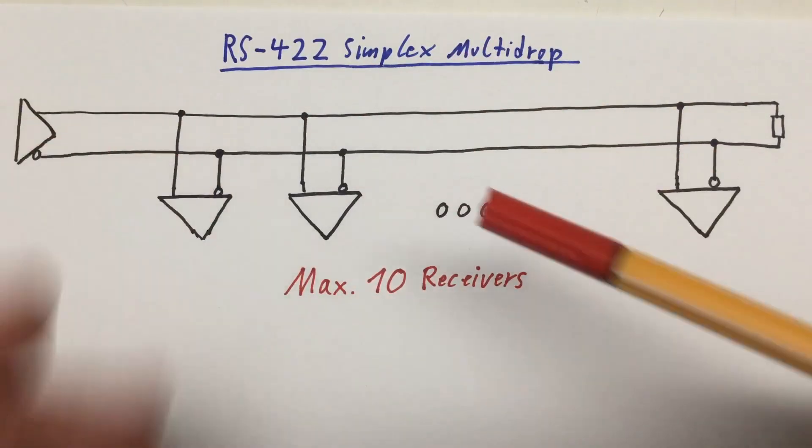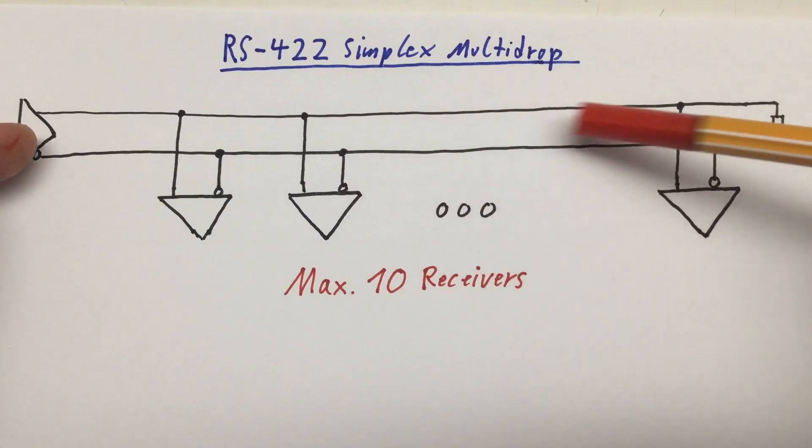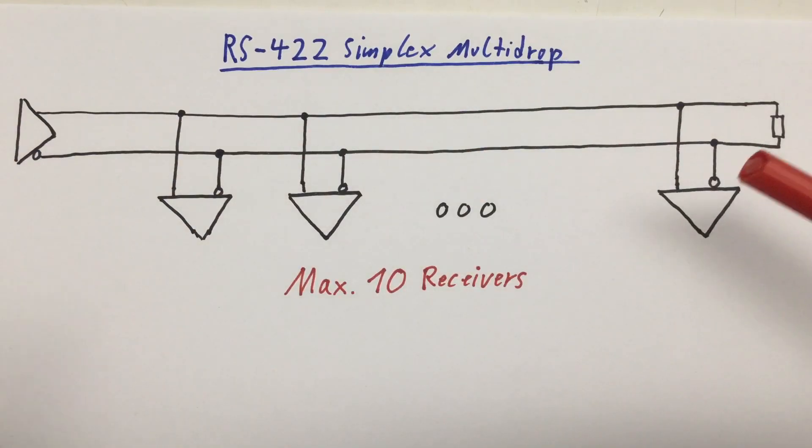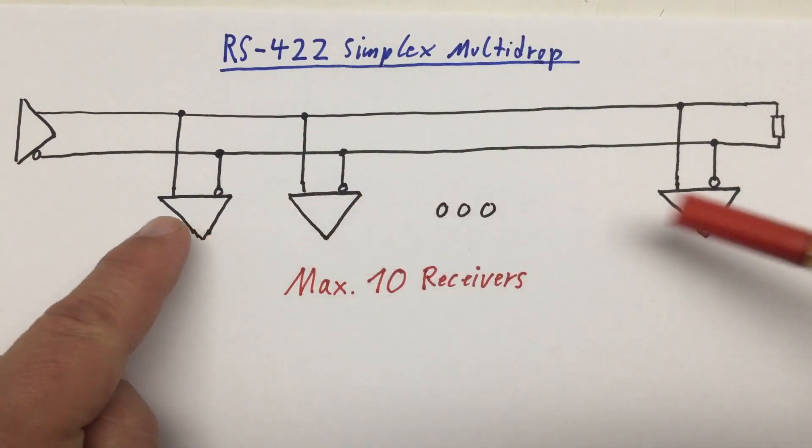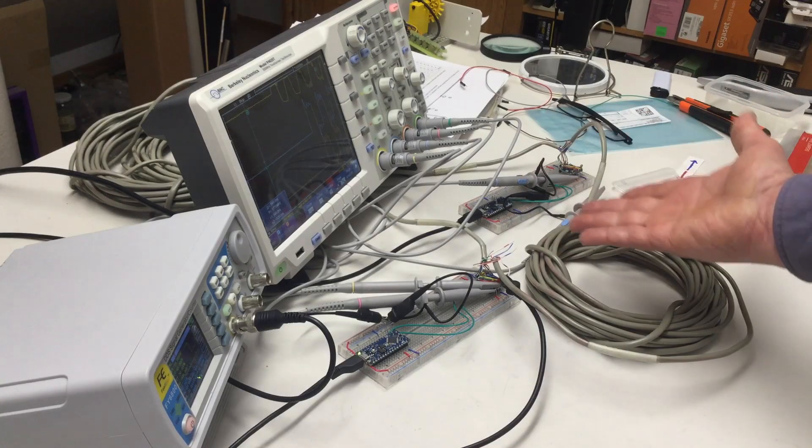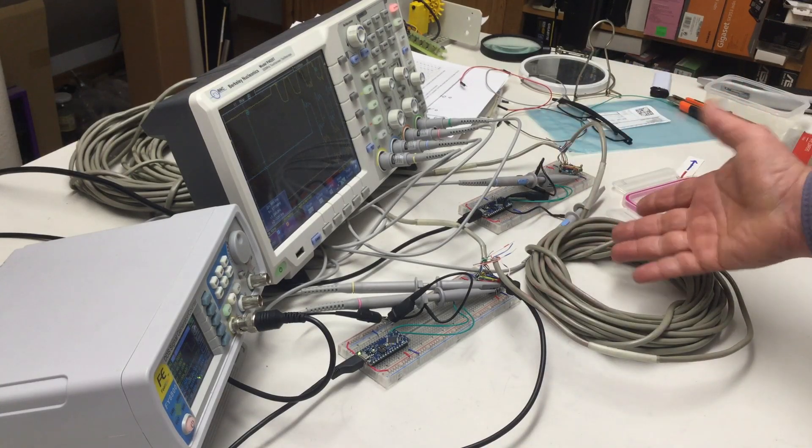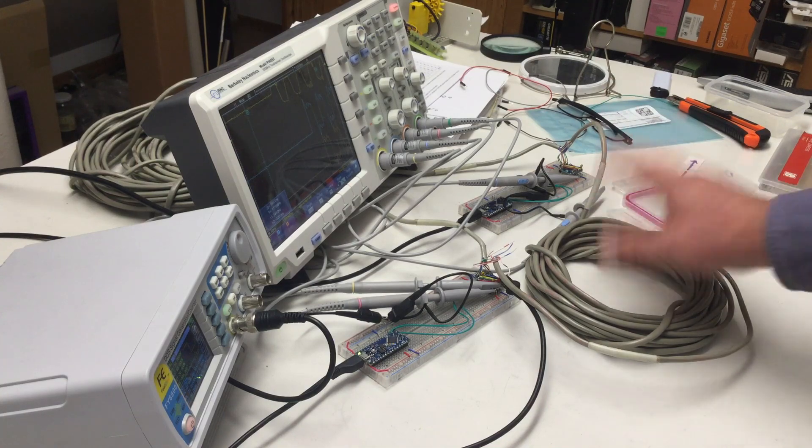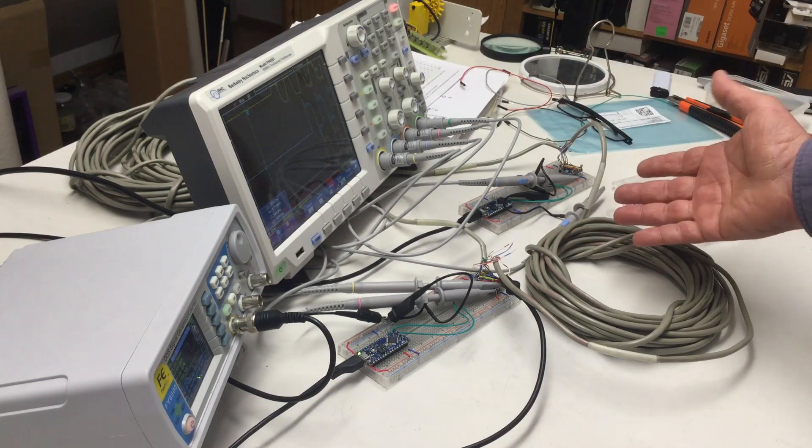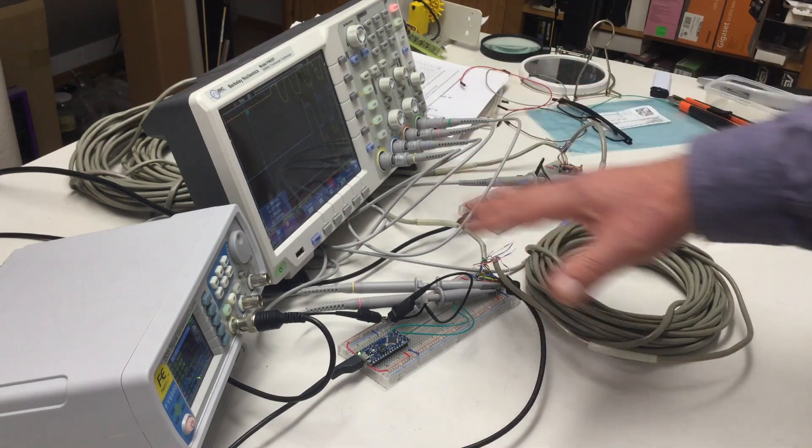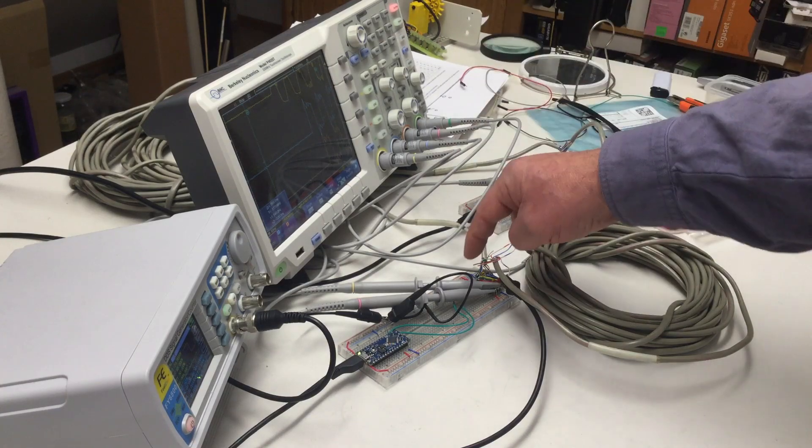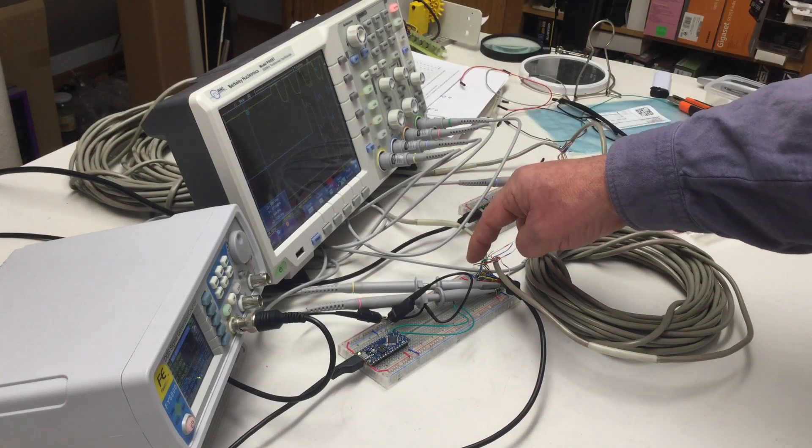Simplex simply means information is only flowing in one direction, from the transmitter to the receivers. I've spliced in here that additional length of 10 meters CAT3 twisted pair cable, basically extending what I already had here on the bench.